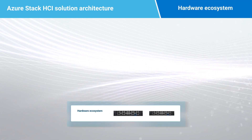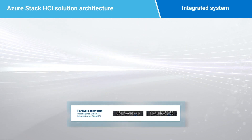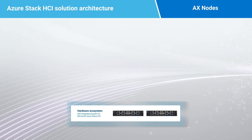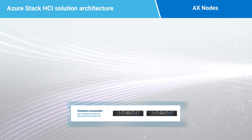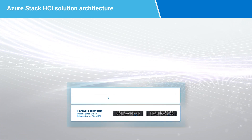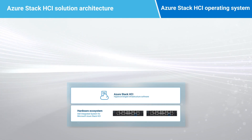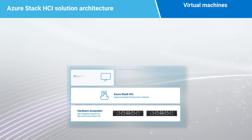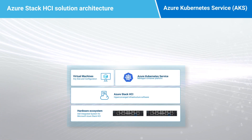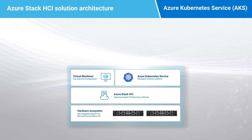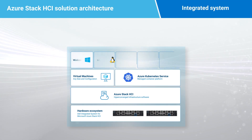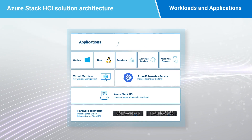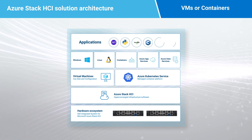The hardware ecosystem layer is running our integrated system with our validated AX nodes as the foundation. Our AX nodes arrive with the purpose-built Azure Stack HCI operating system pre-installed in the factory. Virtual machines and the Azure Kubernetes service are then layered on the OS. The integrated system can run a wide variety of workloads and applications in the VMs or in containers.